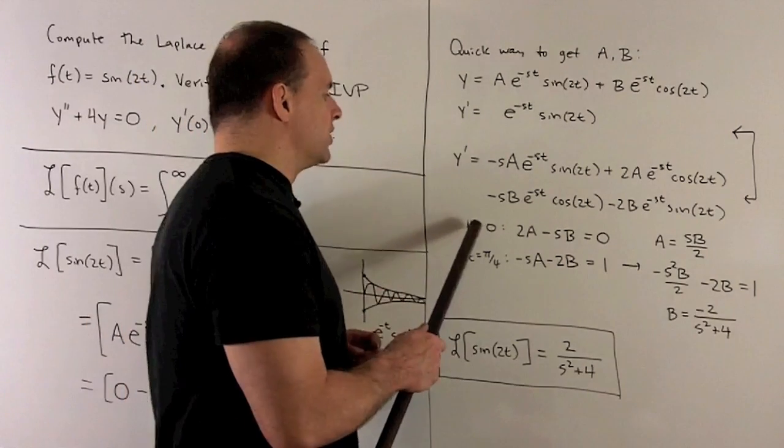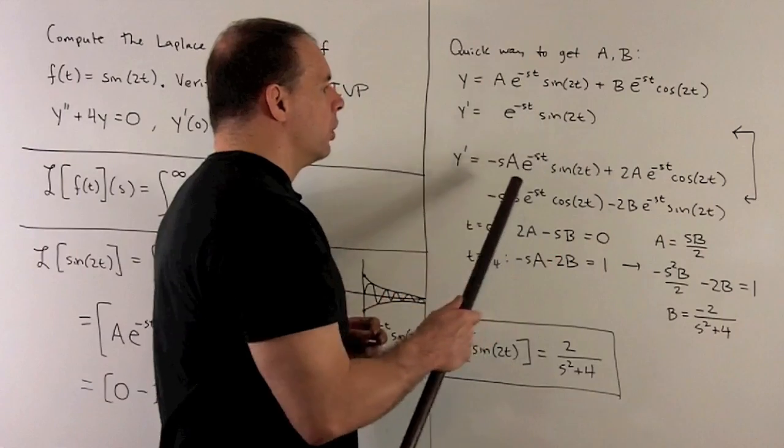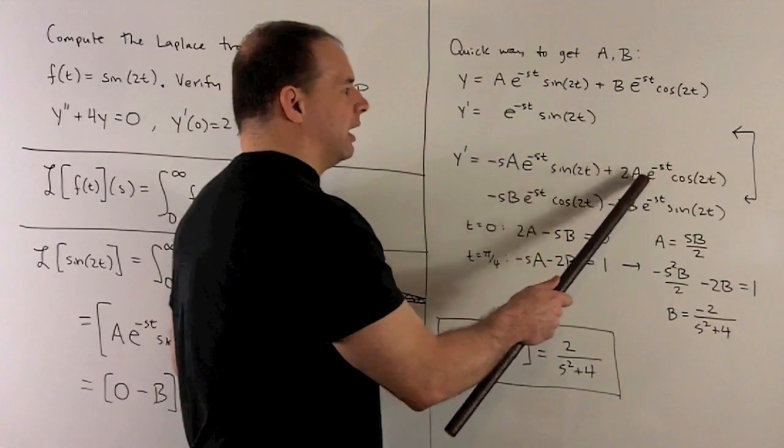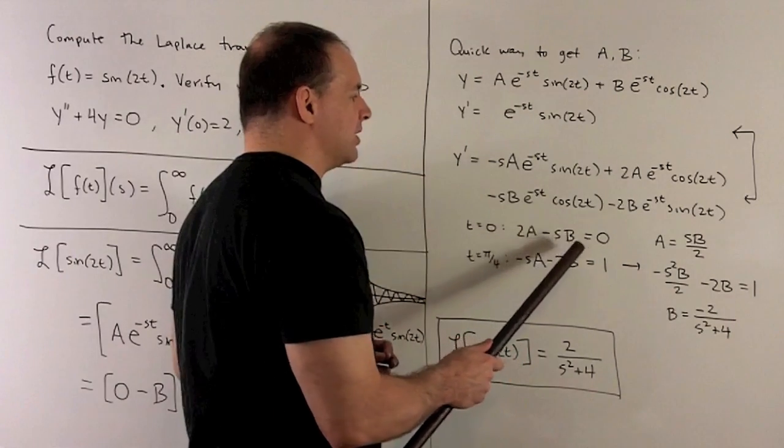For instance, if I let t be equal to zero, what's going to happen? On this side, I get a zero. For here, the sines go to zero, cosines go to one. e's to the zero go to one. So, I'm left with 2a minus sb is equal to zero.